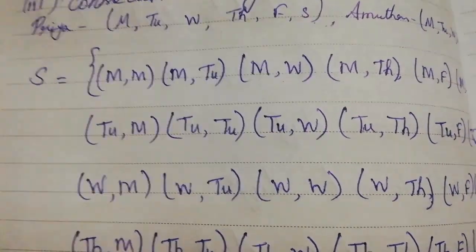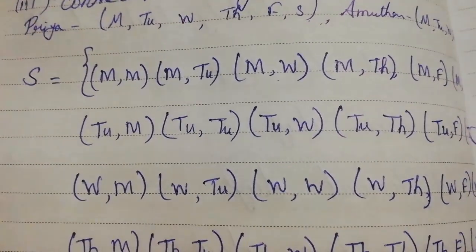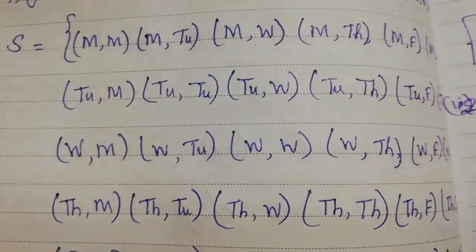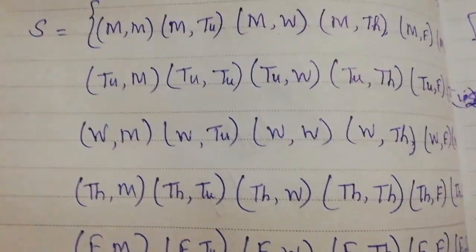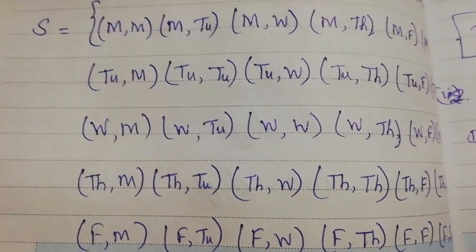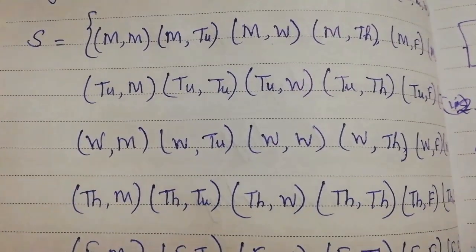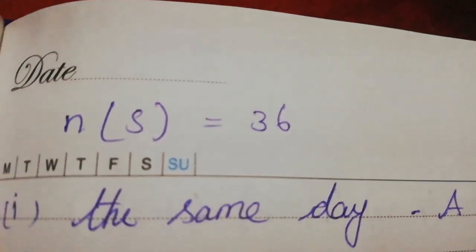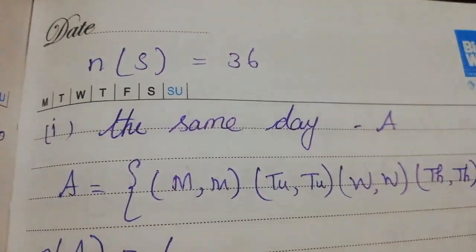The total number of possibilities in the sample space N(S) is 36. For the event of visiting on the same day, we identify the favorable outcomes. Each day — Monday, Tuesday, and so on — counts as one outcome where both visit on the same day.